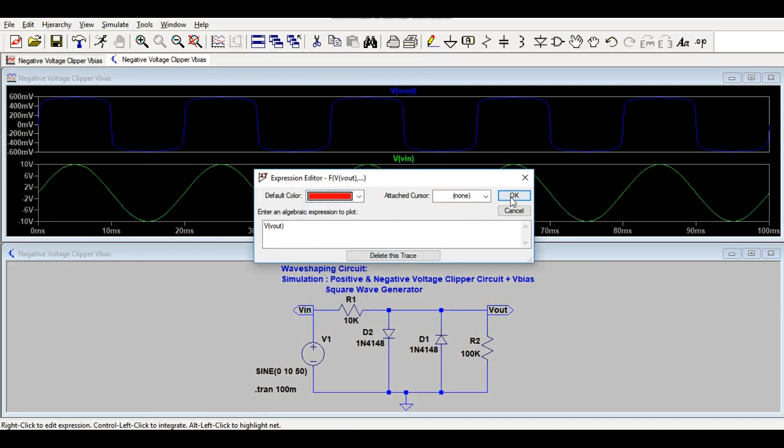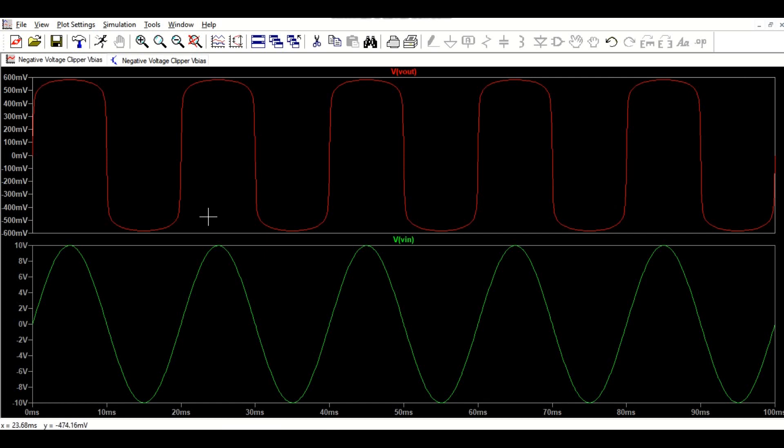Now let's zoom it. You can see here you have a sinusoidal input wave with frequency of 50 hertz. You can see here this is a positive half cycle.